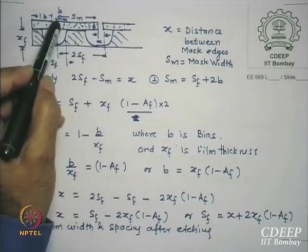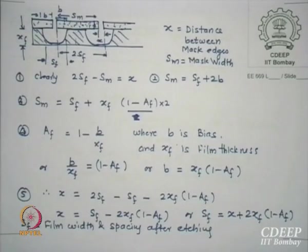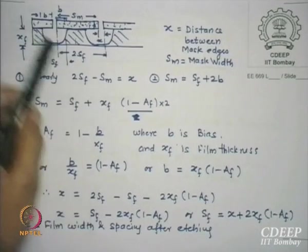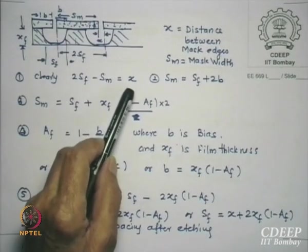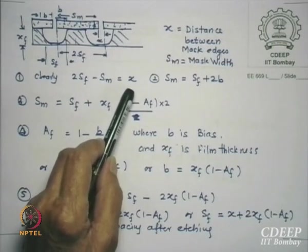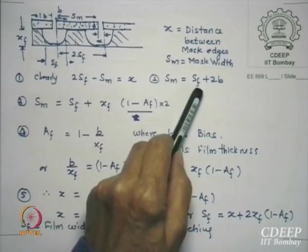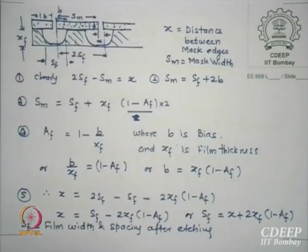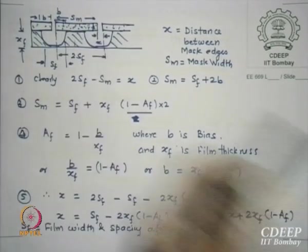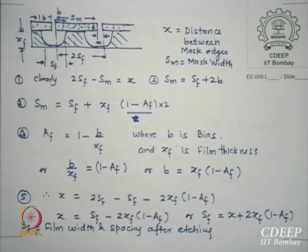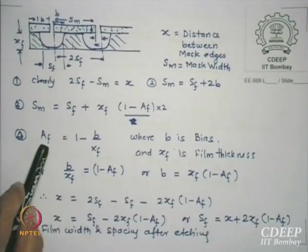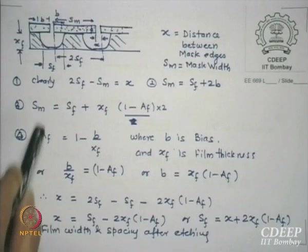This is SM, this is B on both sides. So doing a little maths: 2SF minus SM is the edge-to-edge mask distance X, which is what we are etching. X is what we are etching. We also see SM equals SF plus 2B. So SM minus 2B equals SF. SF is the film width you actually etch, edge to edge. SM equals SF plus 2B. We will come back to this calculation as we did for AF.